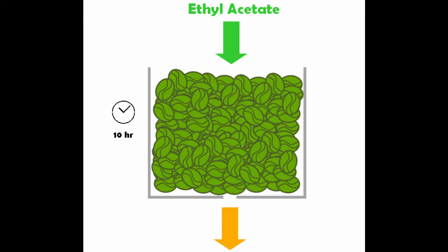Now that the beans have been sent into the extractor, they're treated with the solvent, ethyl acetate, for about 10 hours. This is when the caffeine is actually removed.